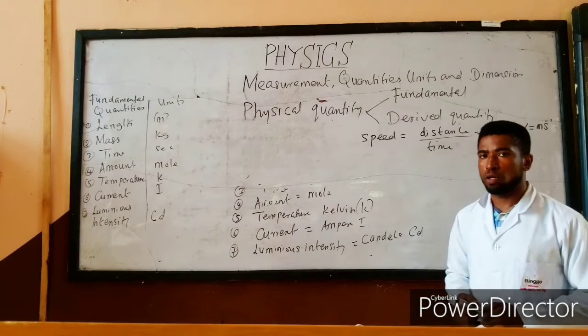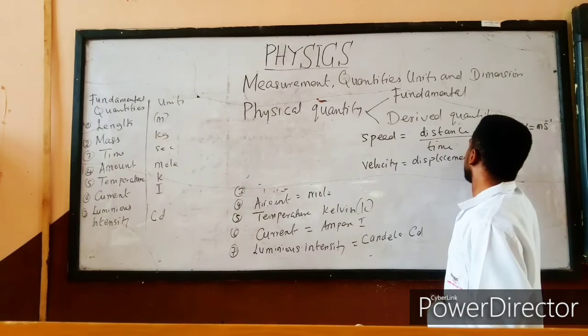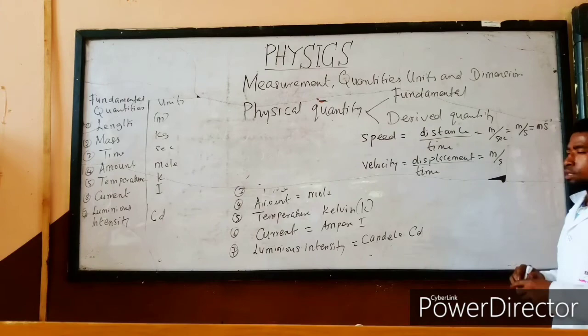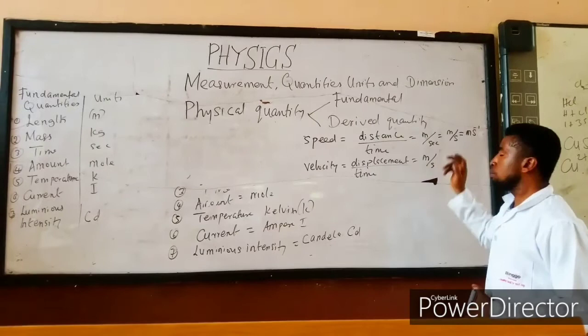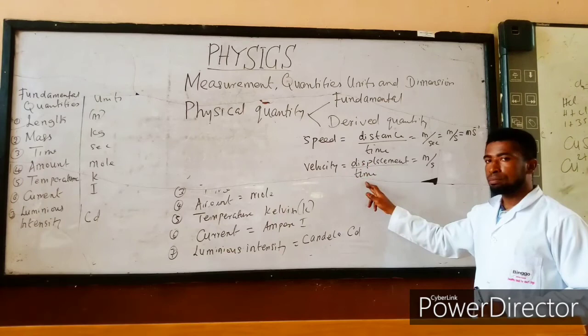Now let us take velocity as a derived quantity. Velocity equals displacement over time. Displacement is measured in meters and time is in seconds. This means speed and velocity have the same units — meter per second. But please, they are not the same: speed is distance over time, while velocity is displacement over time.